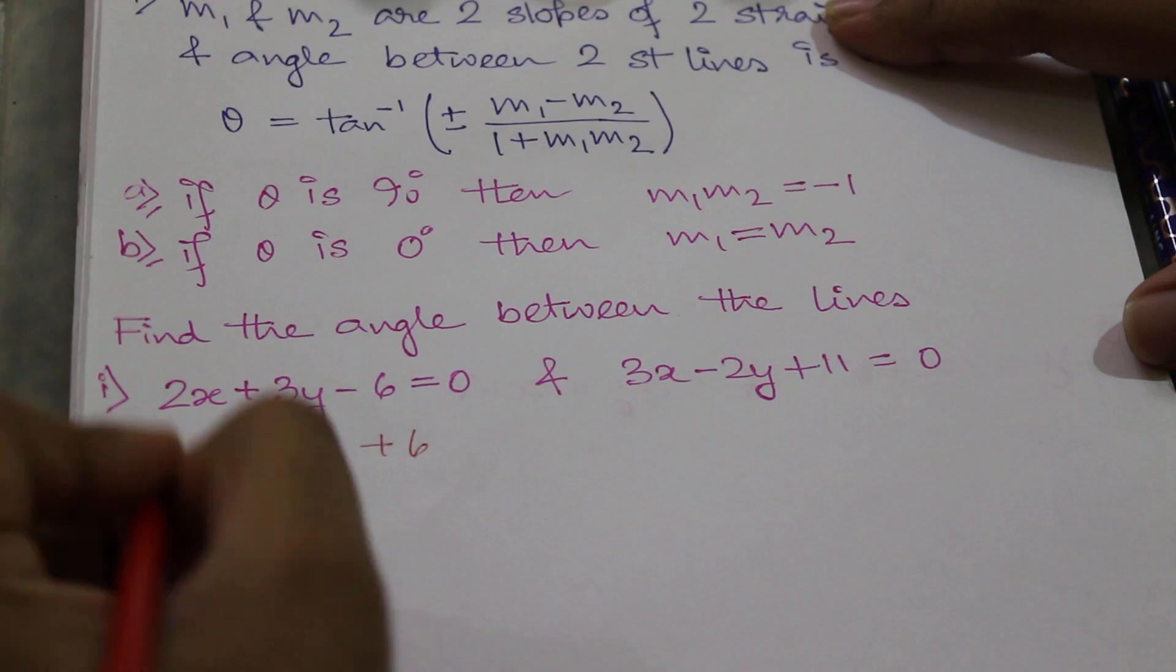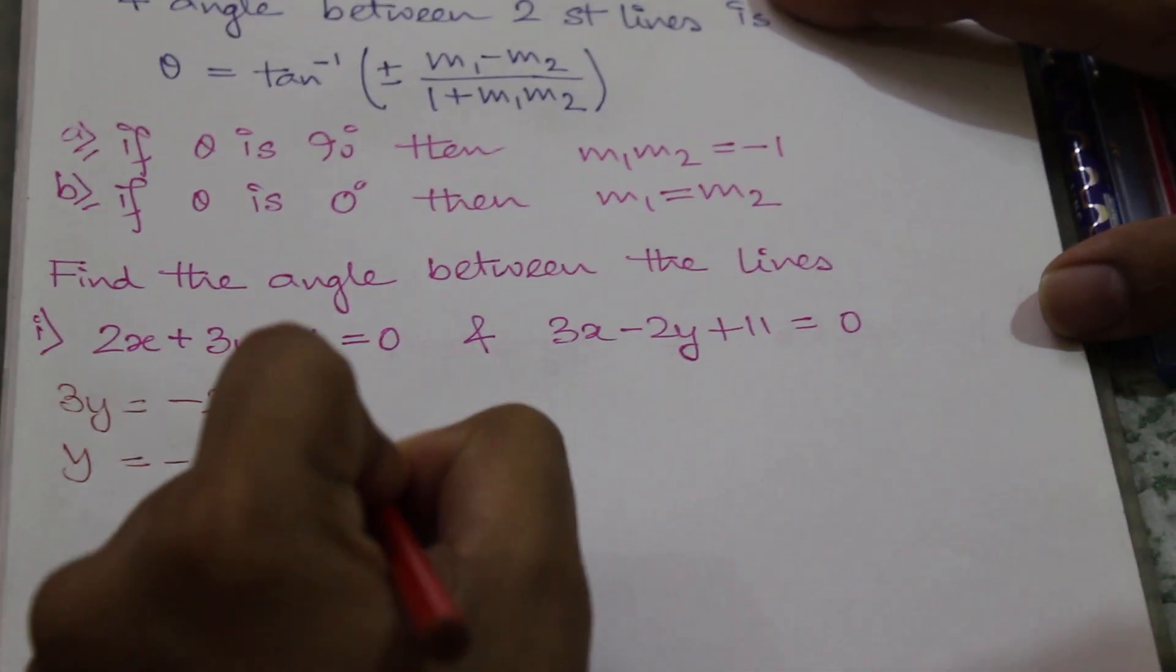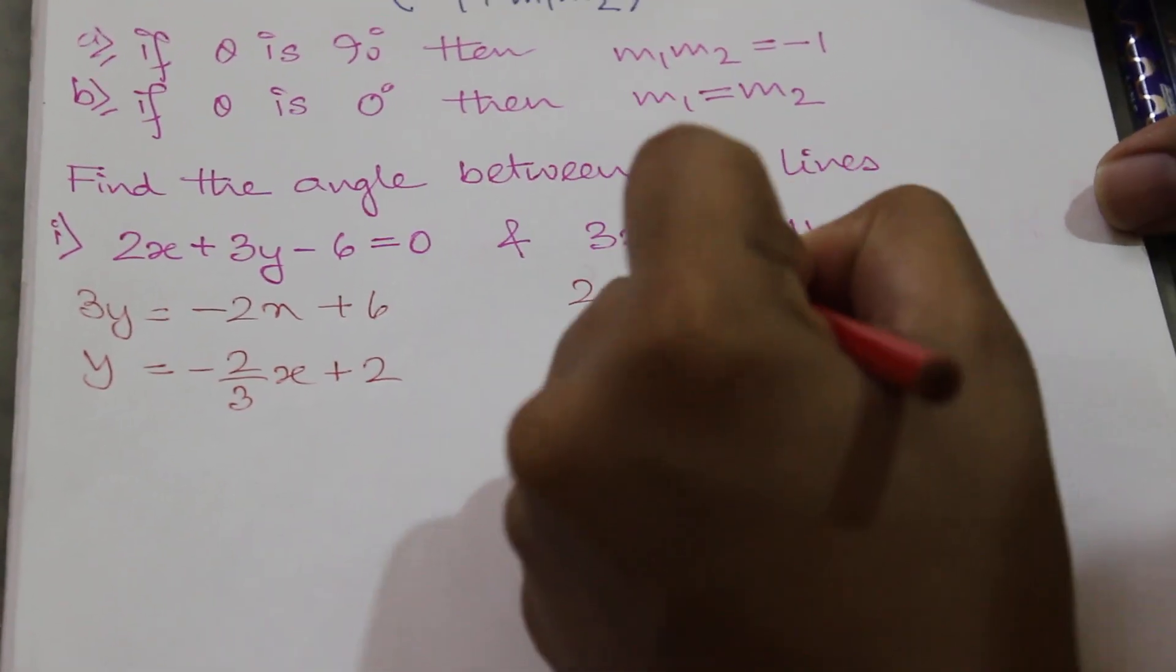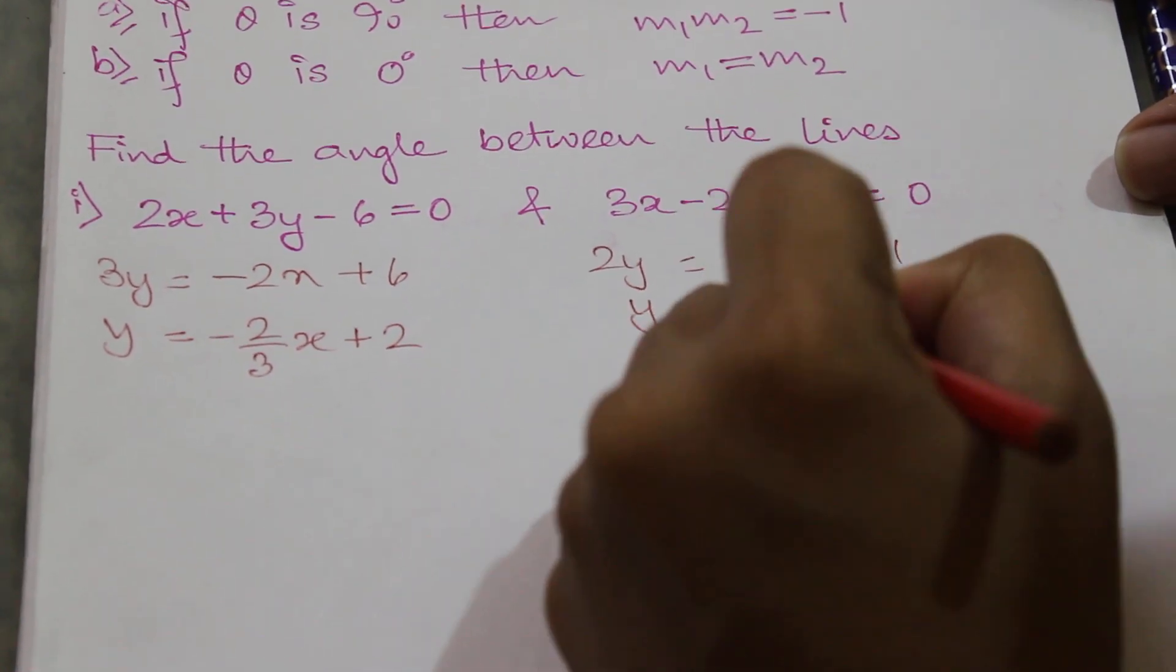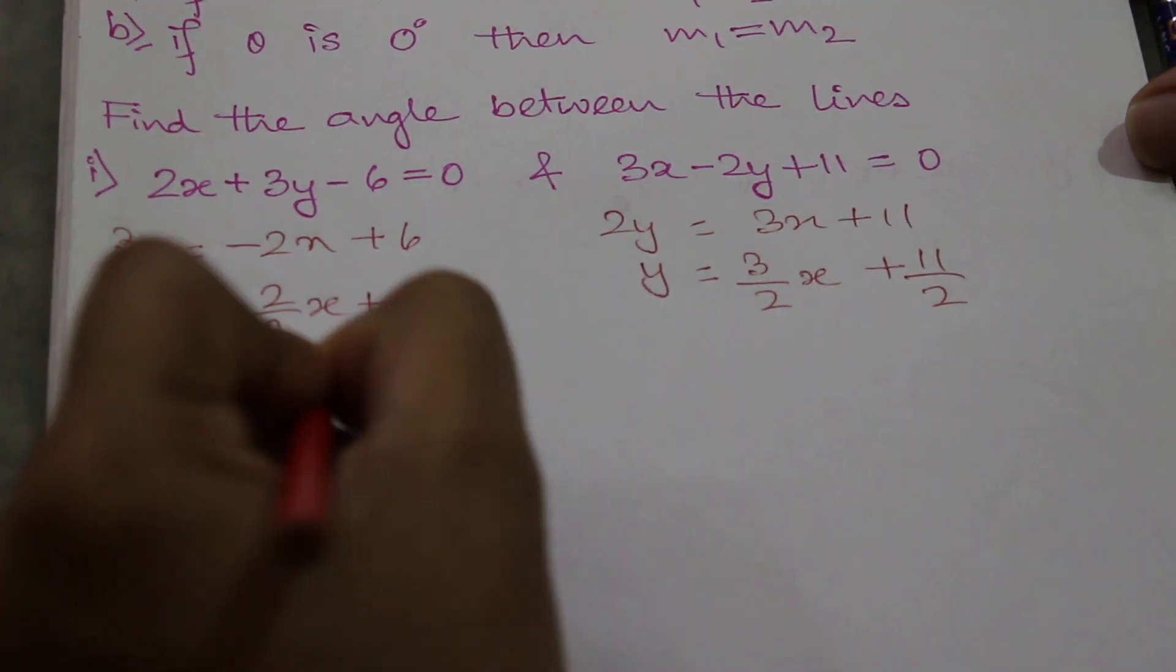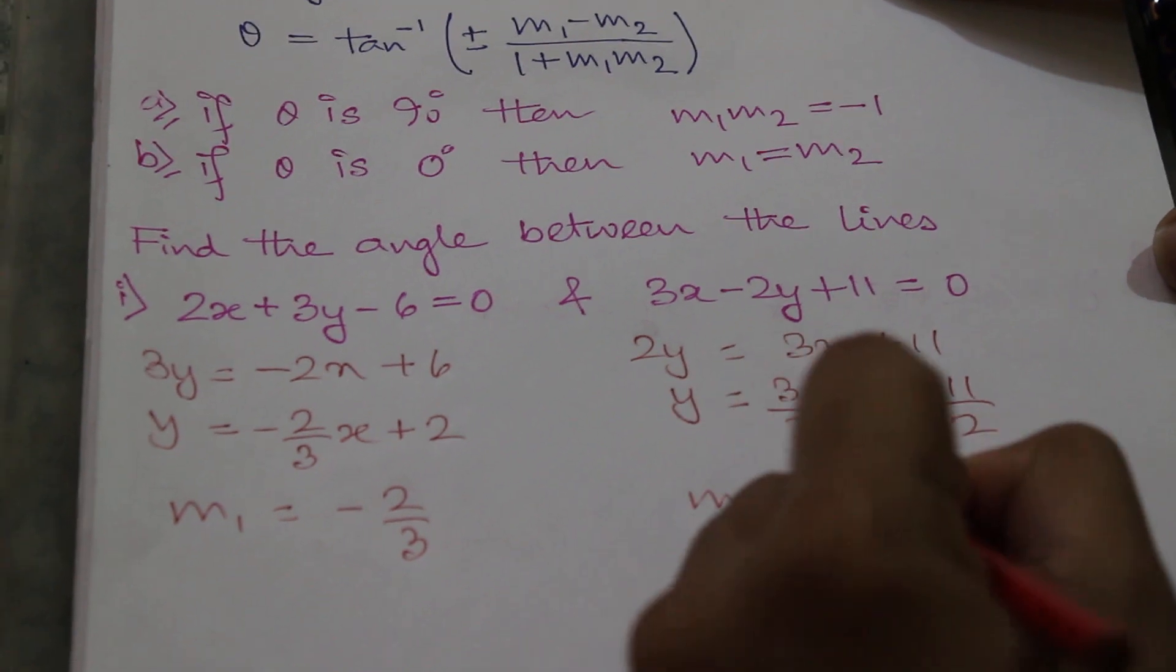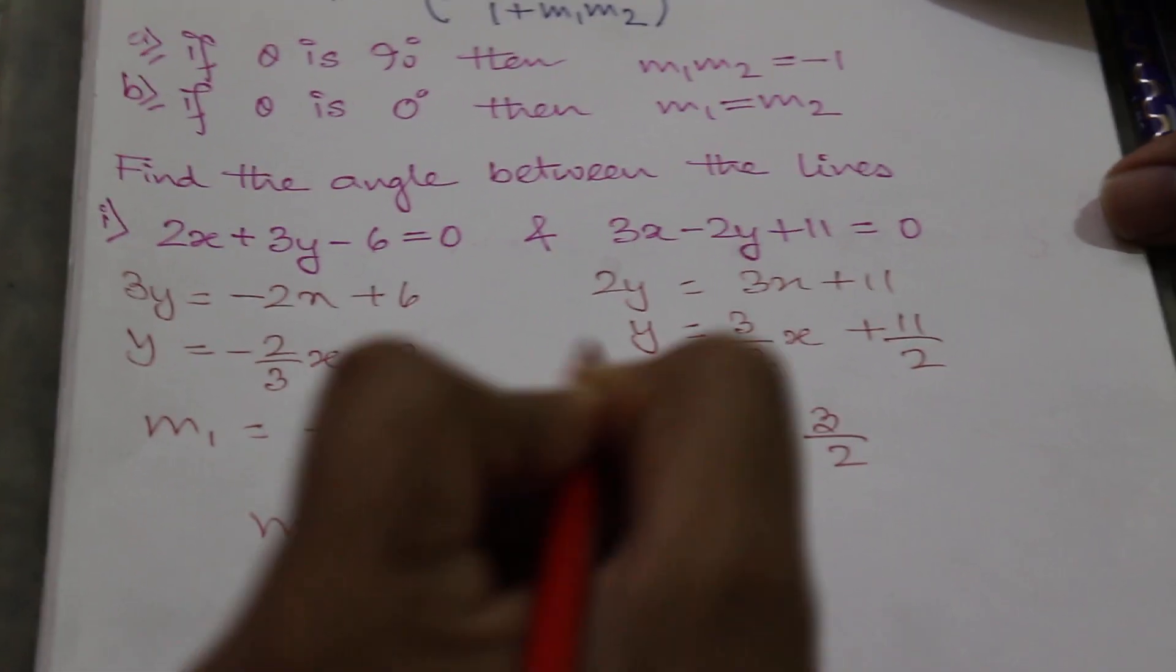So first we will calculate the slopes. 3y = -2x + 6, so y = -2x/3 + 2. And 2y = 3x + 11, so y = (3x + 11)/2. Therefore m1 = -2/3 and m2 = 3/2. So m1 × m2 = (-2/3) × (3/2) = -1.